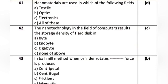Question 17: Nanomaterials are used in which of the following fields? Option A: textile. Option B: optics. Option C: electronics. Option D: all of these. The correct answer is Option D: all of these.